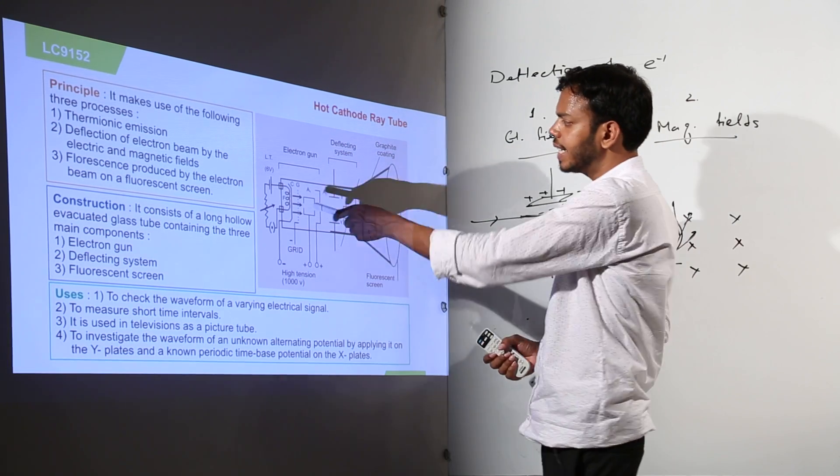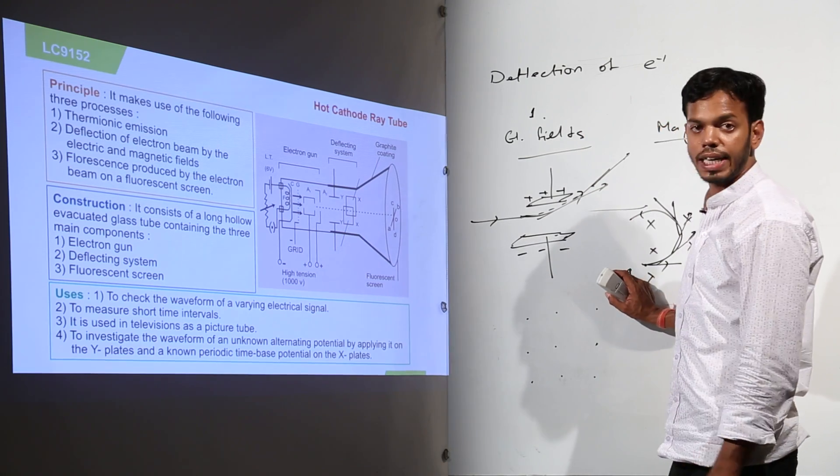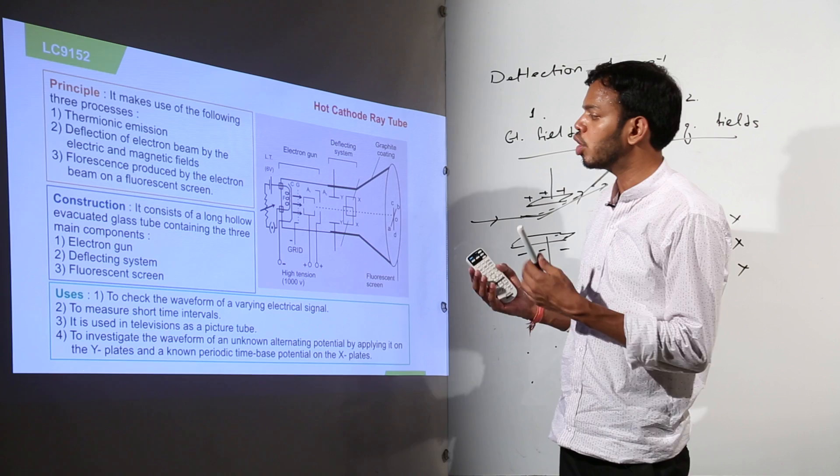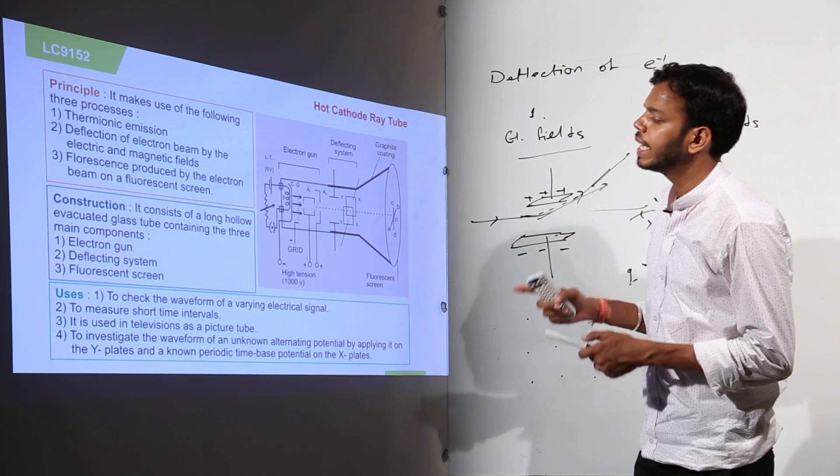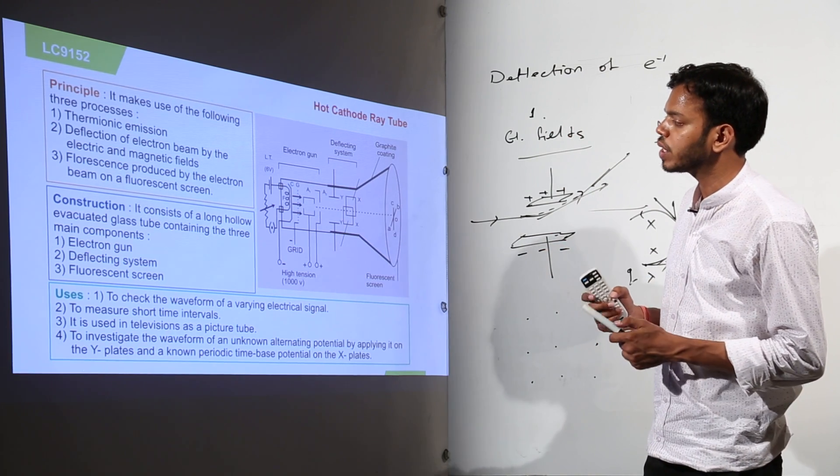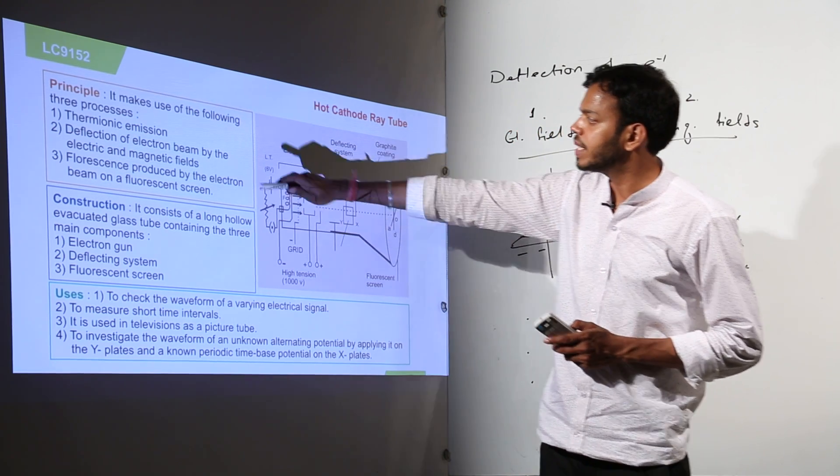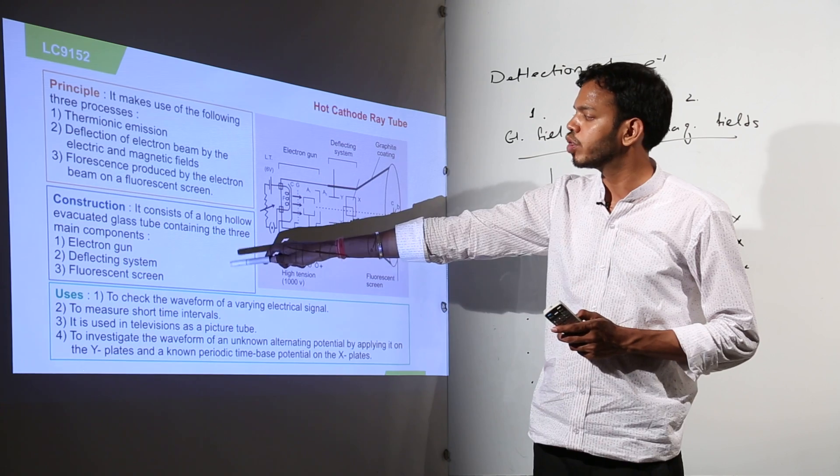Now the construction, it consists of long hollow evacuated glass tube of mainly three regions, three parts or three main components which is one electron gun, deflecting system and fluorescent screen. So electron gun is basically thermionic emission, deflecting system is the deflection of electrons and lastly the fluorescent screen same way.